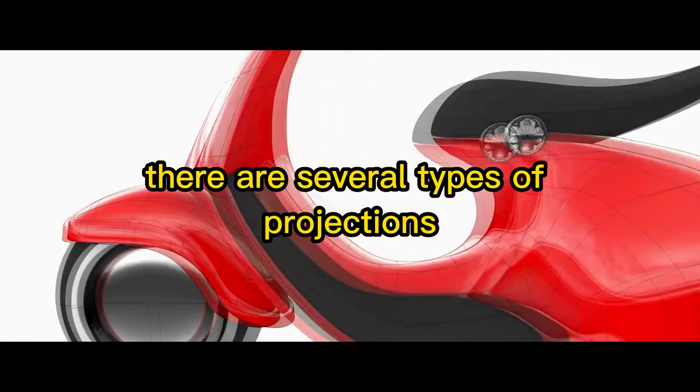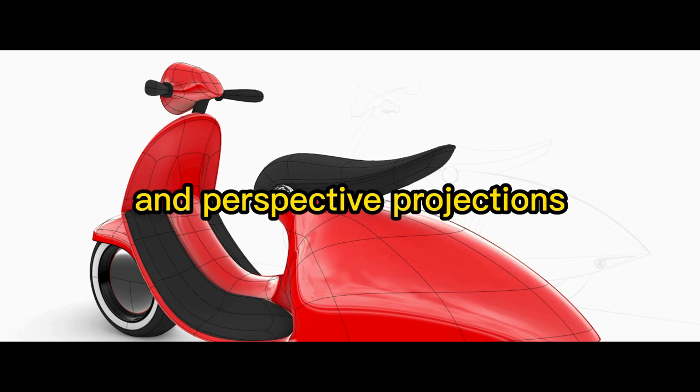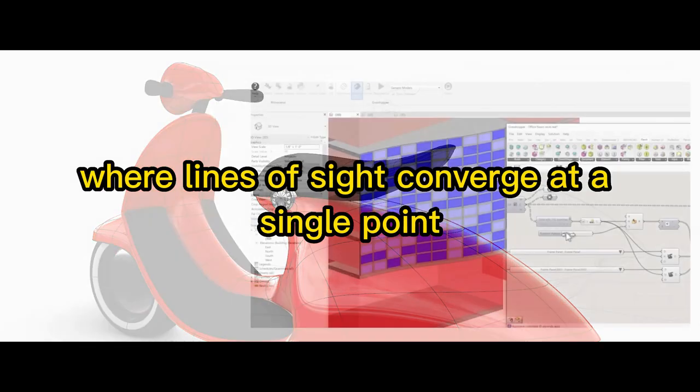There are several types of projections, including parallel projections where lines of sight are parallel, and perspective projections where lines of sight converge at a single point.